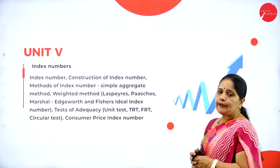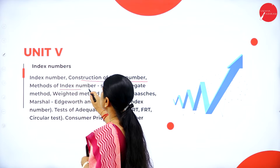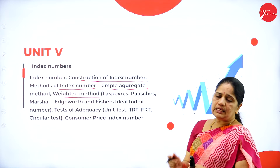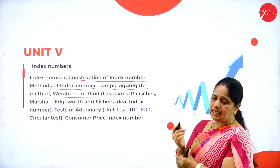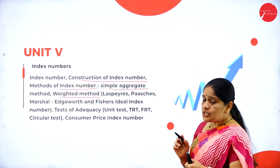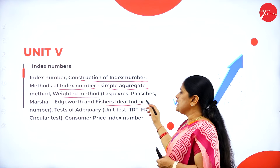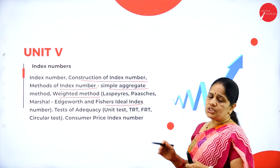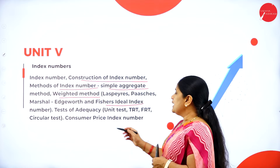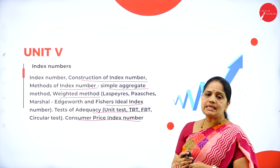Lastly in unit 5, we have index numbers — the construction of index numbers, methods of index numbers, the simple aggregate method and the weighted method. Under the weighted average index numbers, we have two types: the simple aggregate method and the weighted average method. In the weighted average method, we have Laspeyres', Paasche's, Marshall Edgeworth and Fisher's ideal index number. Then test of adequacy, unit test, and lastly the consumer price index number.